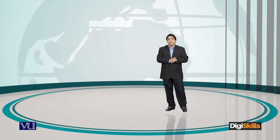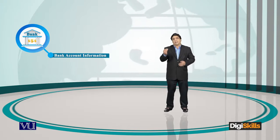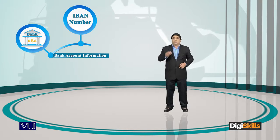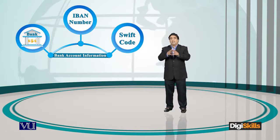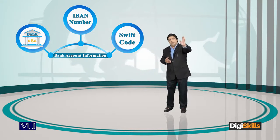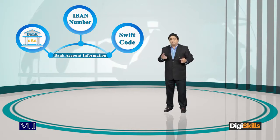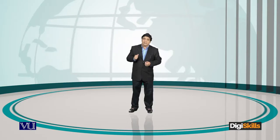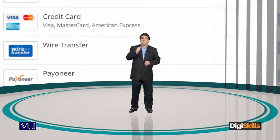So when I raise an invoice as a freelancer, you as an employer pay me the money, and that money stays in my freelance marketplace account — it has not yet reached my bank. Therefore, in order to withdraw that money from your freelance marketplace account to your bank, it is very necessary that you populate all your banking information. You need to populate your wire transfer information on your freelance marketplace — that is the only way the money will reach you.